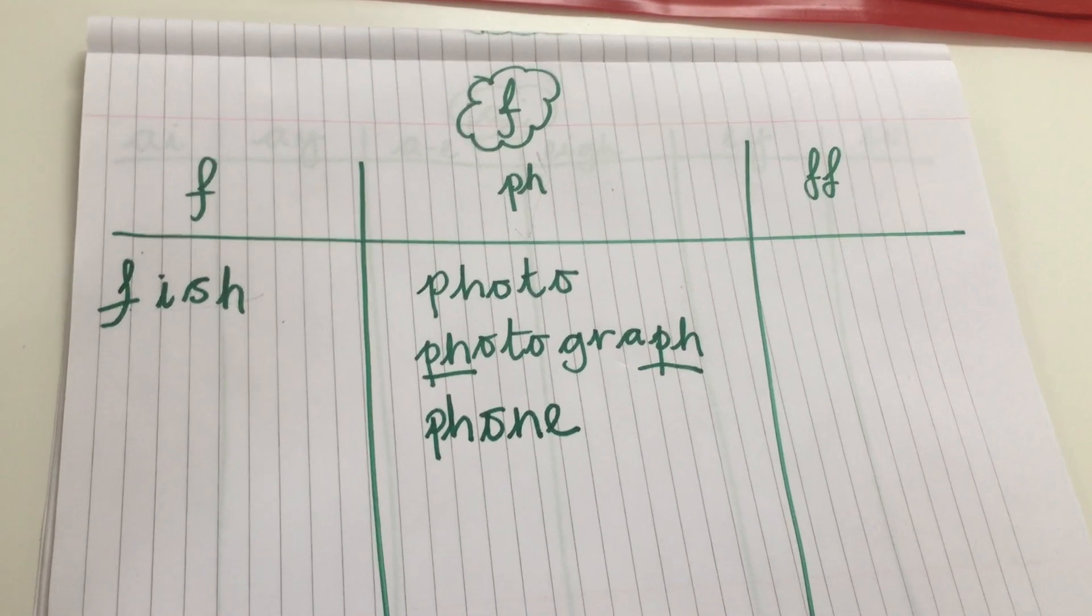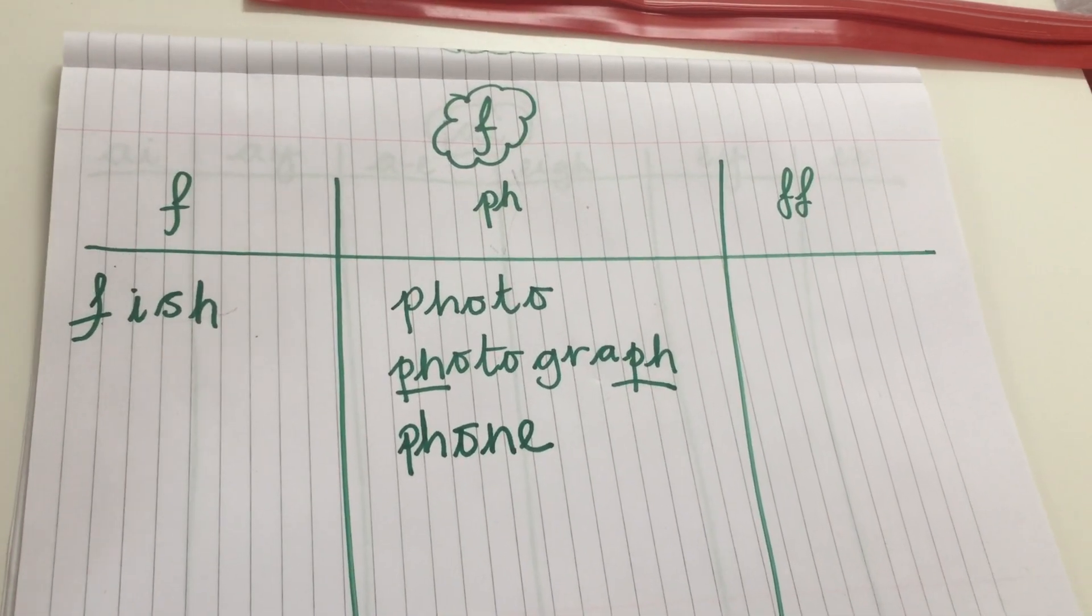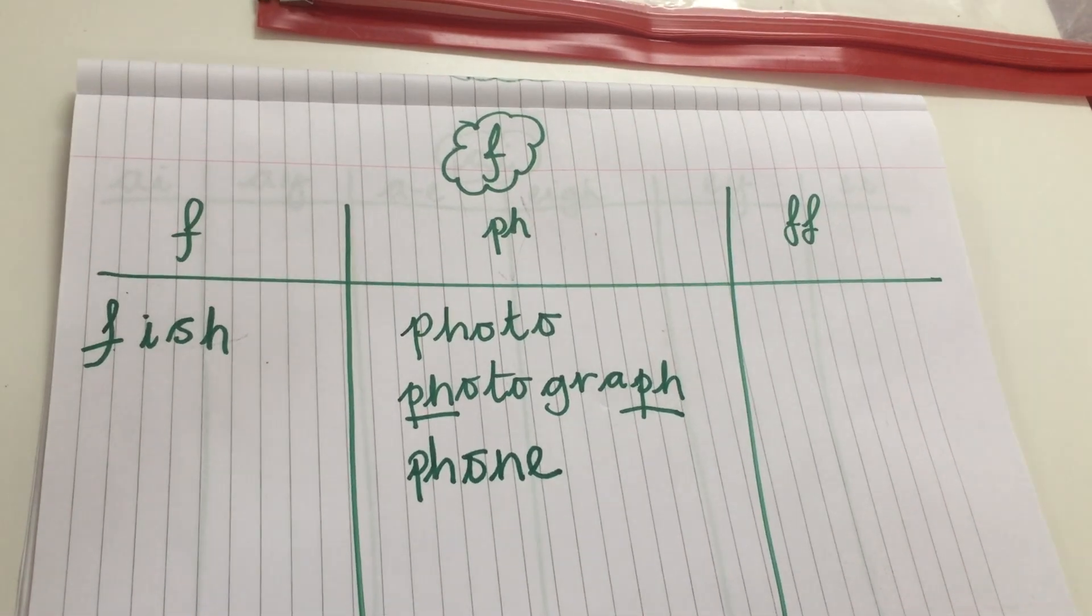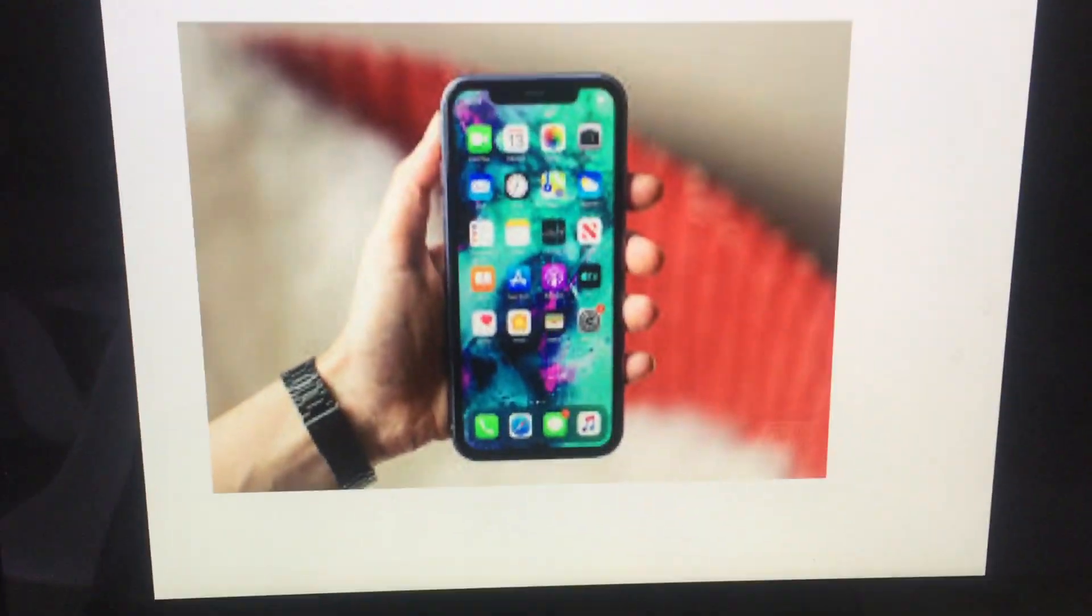So you can write that word in that column here. Please feel free to pause the video at any time if I'm going too fast for you. You can pause it, write the word in, and then turn the video back on again. Well done. So we've got the phone.